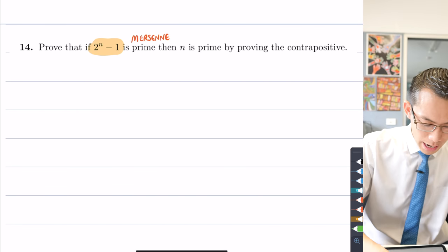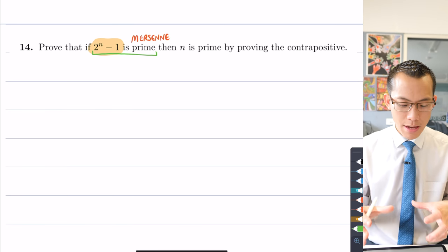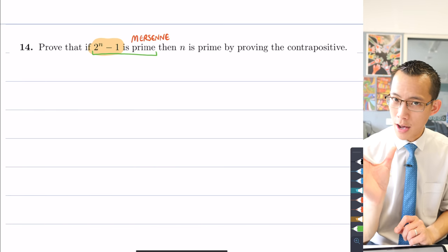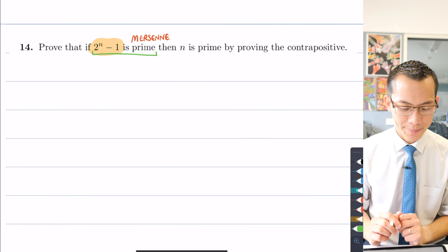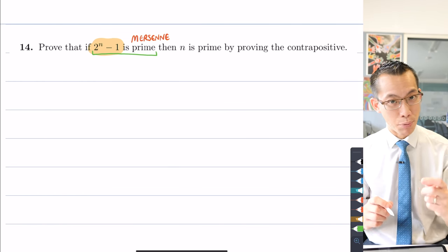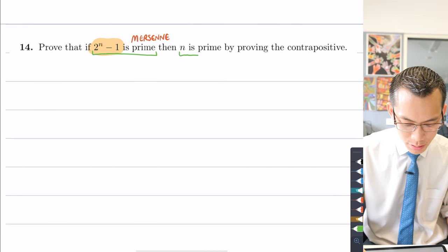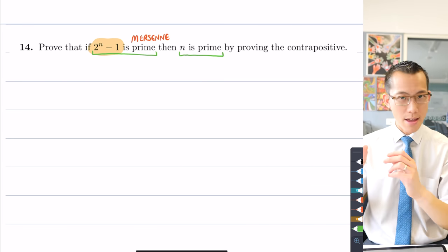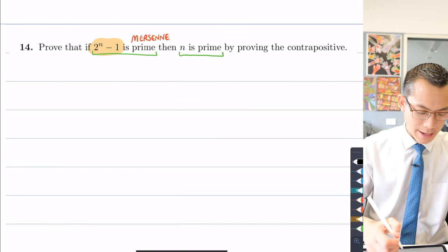You can see here if 2^n - 1 is prime. So 2^n - 1 is prime is the first half, it's the antecedent clause or statement within this implication. I'm going to negate that and put it rather than at the beginning, I'm going to put it at the end. And then you've got this second half, the consequent statement, then n is prime. So I'm going to negate that as well and put it at the beginning.